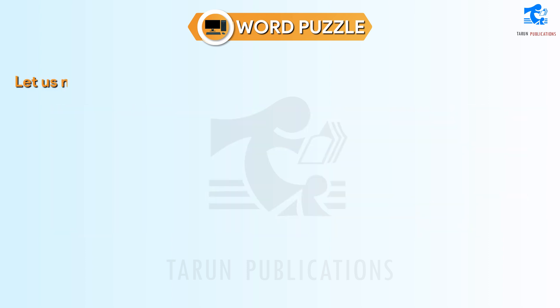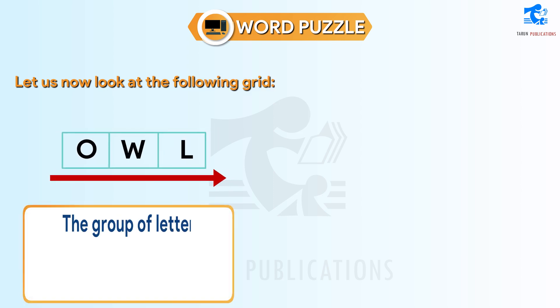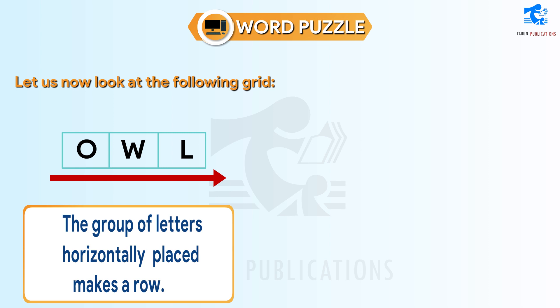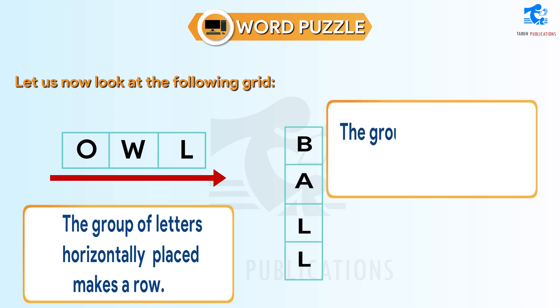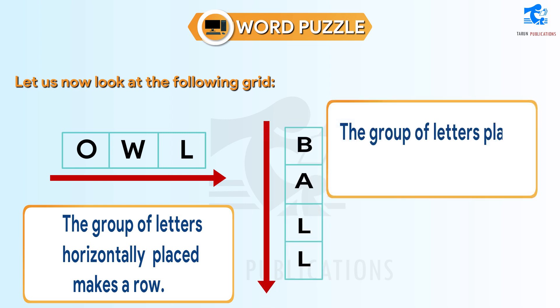Let us now look at the following grid. The group of letters horizontally placed makes a row. The group of letters placed vertically makes a column.